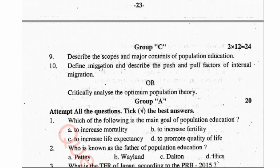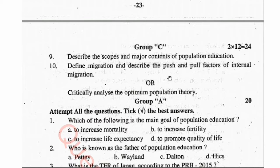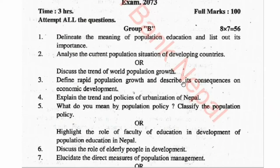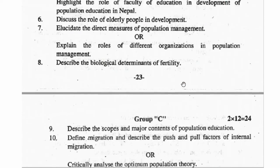Question 9: Describe the scope and major contents of population education. Question 10: Define migration and describe the push and pull factors of internal migration. Question B: Critically analyze the optimum population theory.